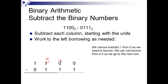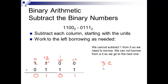Instead of adding ten like in decimal, we're going to add a 2. We need to borrow from that 2 for the next position, so that 2 becomes a 1, and we add 2 to the column below. So 2 minus 1 is 1. 1 minus 1 is 0. We can't subtract 1 from 0, so we borrow again — that 1 becomes a 0, add 2. 2 minus 1 is 1, and 0 minus 0 is 0.